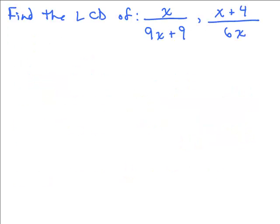Here's another example where the denominators are not factored — and remember, when you're looking for the least common denominator, you're only concerned with the denominator. Underneath each fraction I'm going to factor. So I have 9 times (X plus 1), and I have 6X. You could break the 9 and 6 down to primes: 9 is 3 times 3 and 6 is 2 times 3, but most people just find the least common multiple of 6 and 9, which is 18.